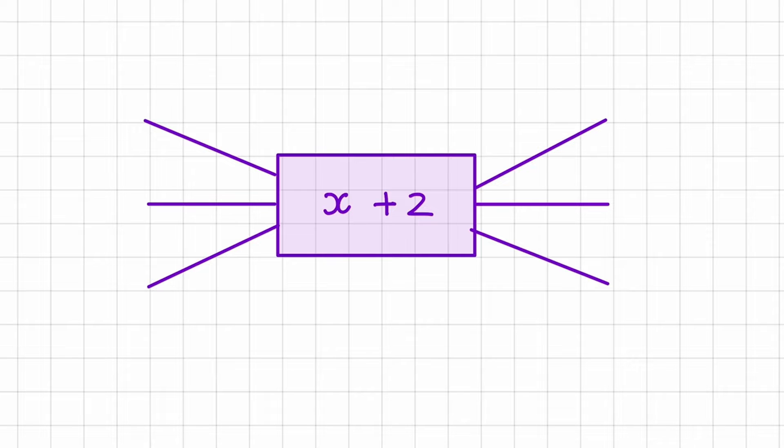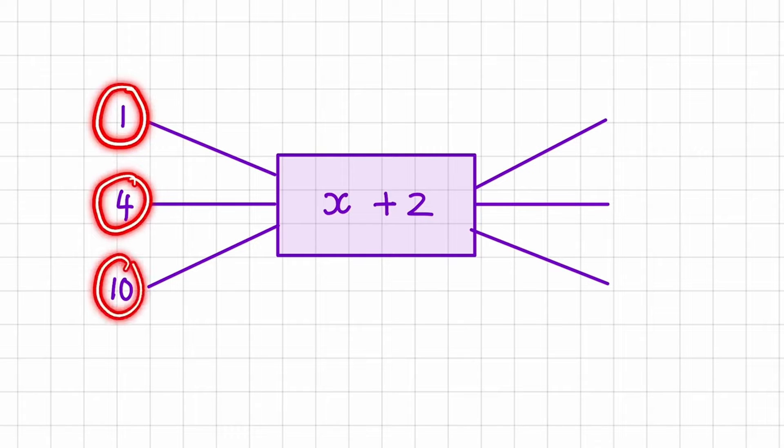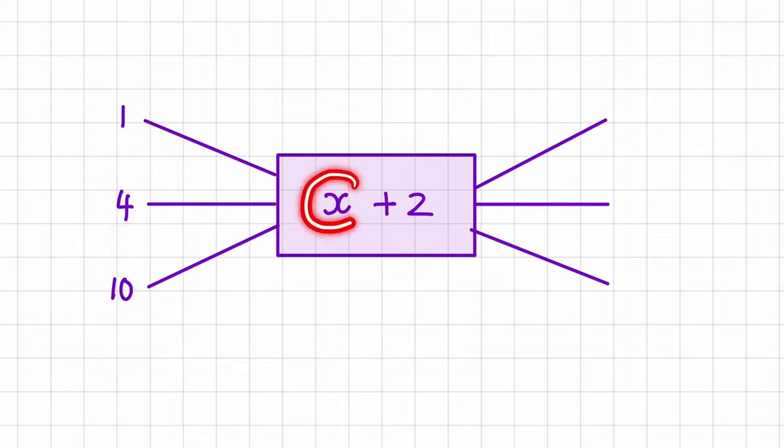And we're going to have values on the left of 1, 4 and 10. Now how this machine works is we take the number on the left hand side and we replace the variable on the inside with that number to produce an output value. So the values on the left here are called input values and the numbers on the right here are called output values.